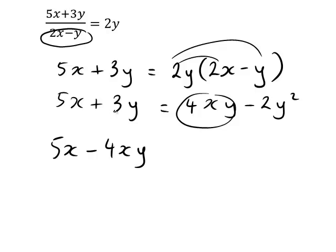We still also have a plus 3y on the left. So we subtract that from both sides, to cancel that from the left, and to put minus 3y on the right-hand side of the equation. So that we now have 5x minus 4xy equals negative 3y minus 2y squared.